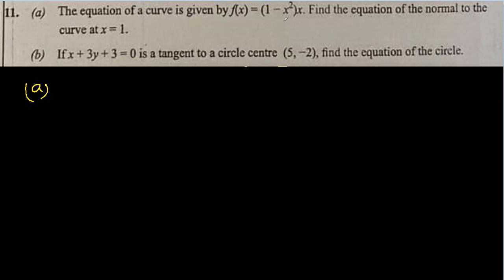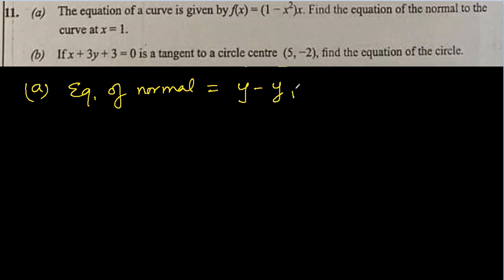Number 11, part A. The equation of the curve is given. Find the equation of the normal to the curve at x equal to 1. The equation of the normal is y minus y1 equal to minus 1 over m times x minus x1, where x1 and y1 are the coordinates of the point. We already know x equal to 1.